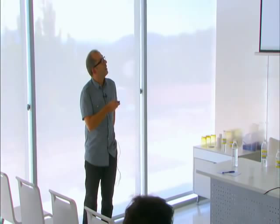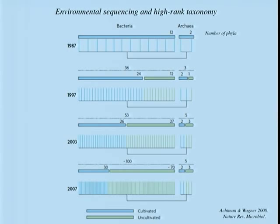This figure shows how much we have learned from environmental sequencing at the level of high-rank taxonomy. Before environmental sequencing, in 1987, there were 12 large phylogenetic groups — phyla — of bacteria and two of archaea, all cultured because that was the only way we knew them. With environmental sequencing, there are now 12 more groups known only by environmental sequences. By 2007, there are 30 phyla with cultured representatives, but more than 100 phyla of bacteria known only by their sequences.